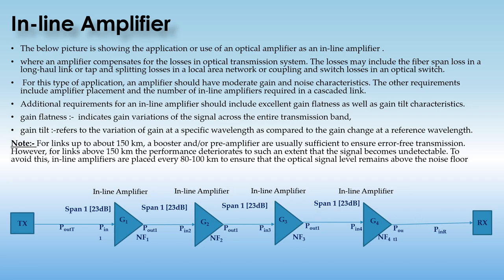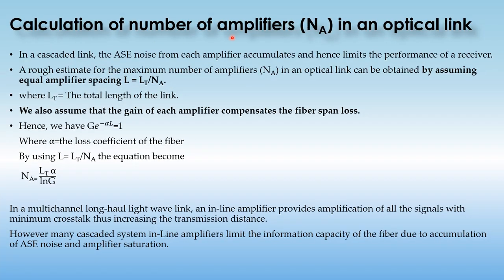Moving to the calculation of the number of amplifiers in an optical link — in a cascaded link, the ASE noise from each amplifier accumulates and limits the performance of the receiver, and also limits the distance of the optical link. We cannot use an unlimited number of optical amplifiers. There is a rough estimate formula, and we assume equal amplifier spacing.